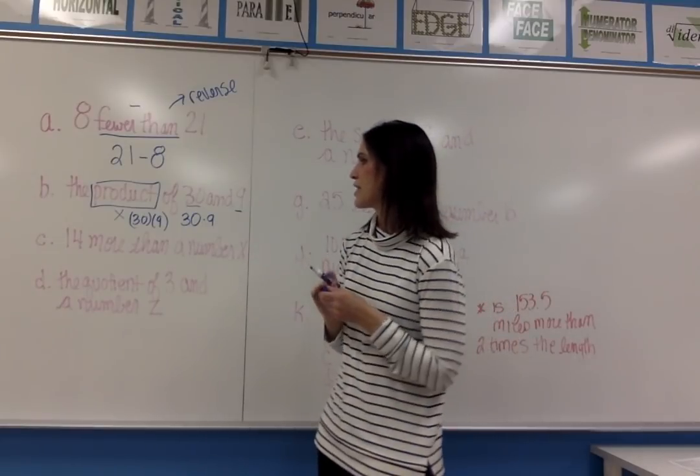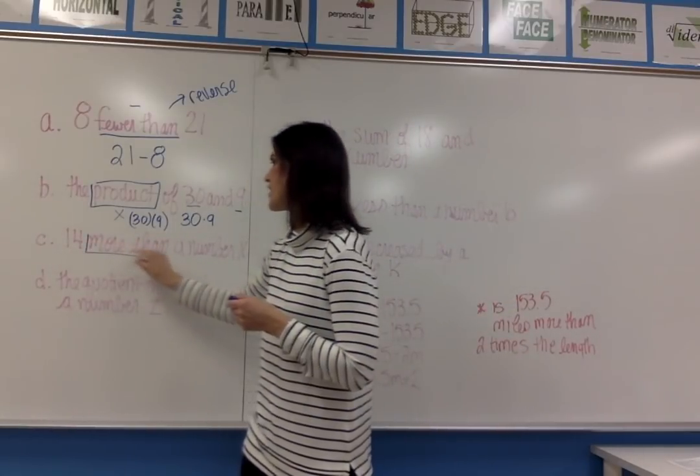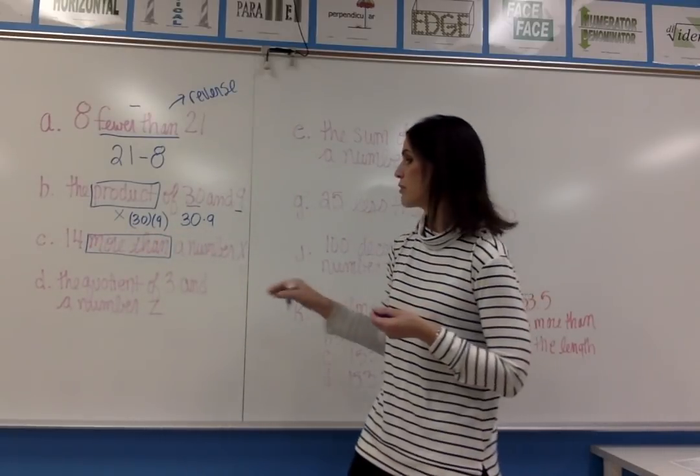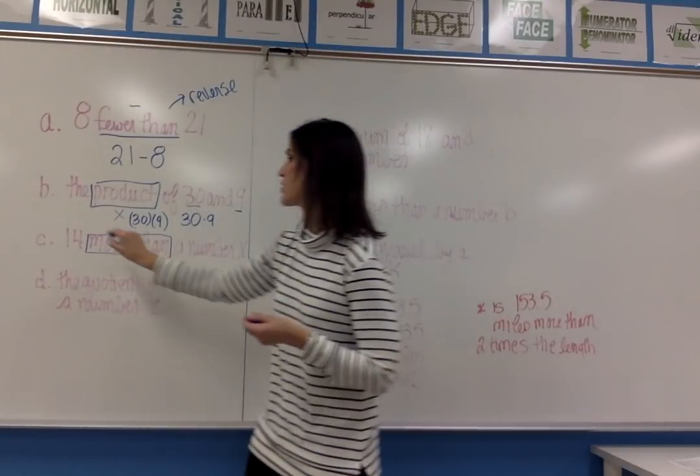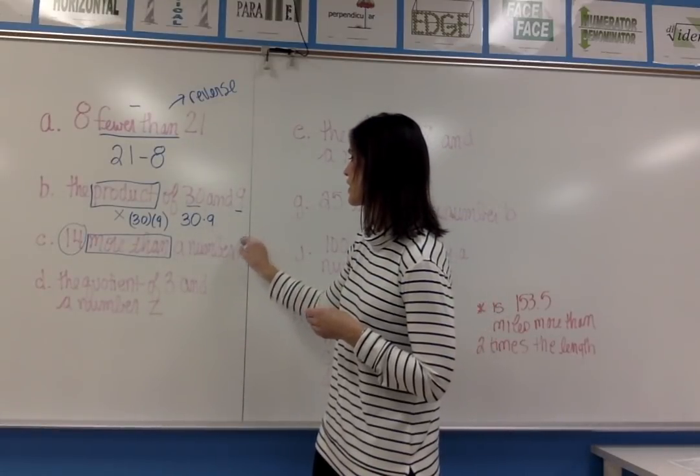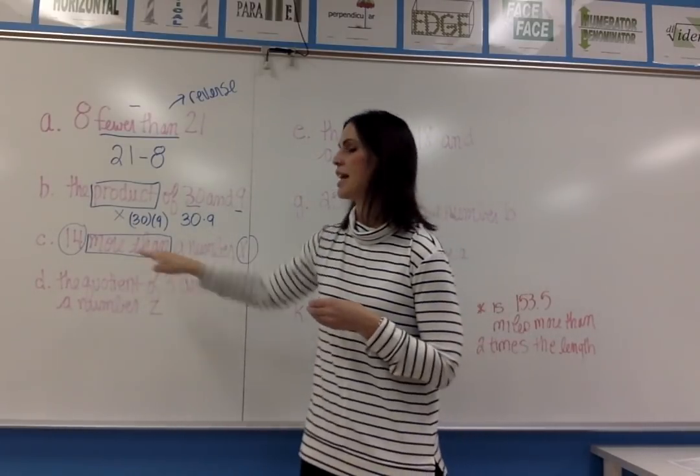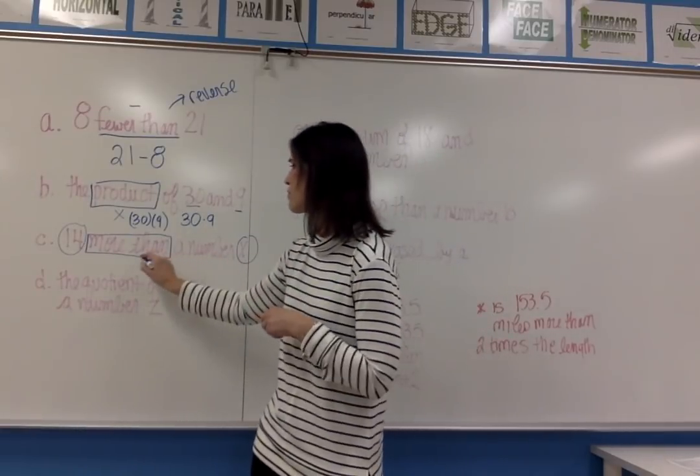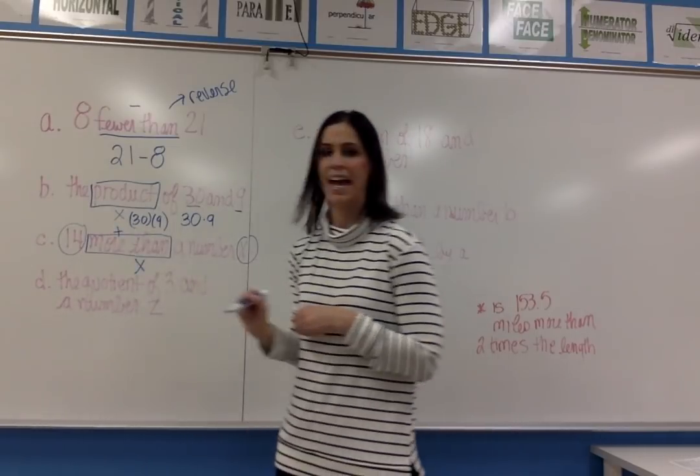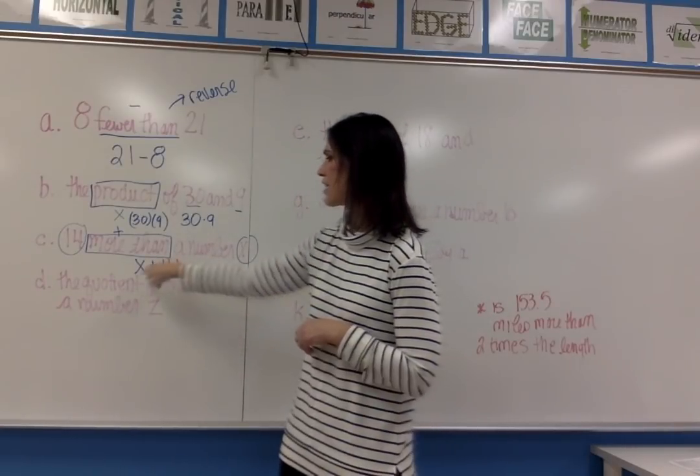My next example says 14 more than a number X. This is another phrase that tells you to reverse the order. When you see more than, you reverse the order of values and variables. This is an algebraic expression because we have at least one variable, one number value, and at least one operation. So it's X plus 14—14 more than X, so 14 comes second.